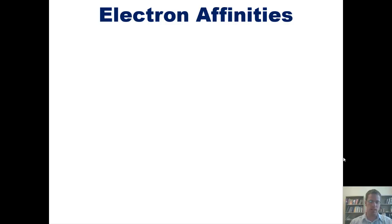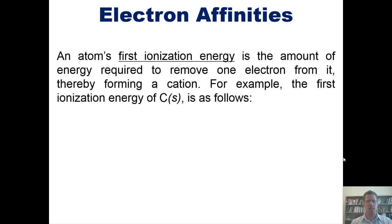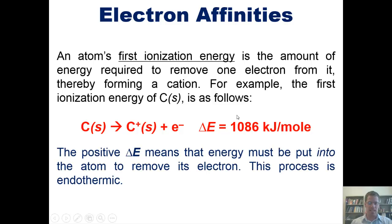Let's begin by discussing electron affinities. As I mentioned in an earlier video, an atom's first ionization energy is the amount of energy required to remove one electron from it, thereby forming a cation. For example, the first ionization of carbon is as follows. The positive delta E means that energy must be put into the atom to remove its electron. In other words, it takes energy to remove an electron from solid carbon. Because this delta E has a positive sign, this process is endothermic.